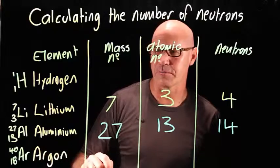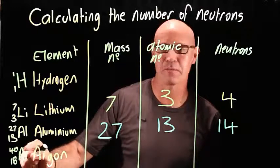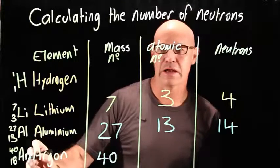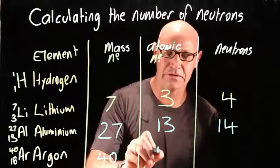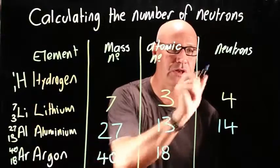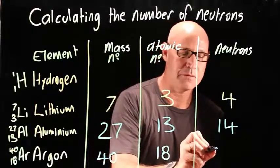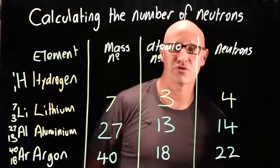Argon has got a mass number, remember that's the bigger of the two, of 40, and it's got an atomic number of 18. So the number of neutrons is going to be 40 take 18, that means we've got 22 neutrons.